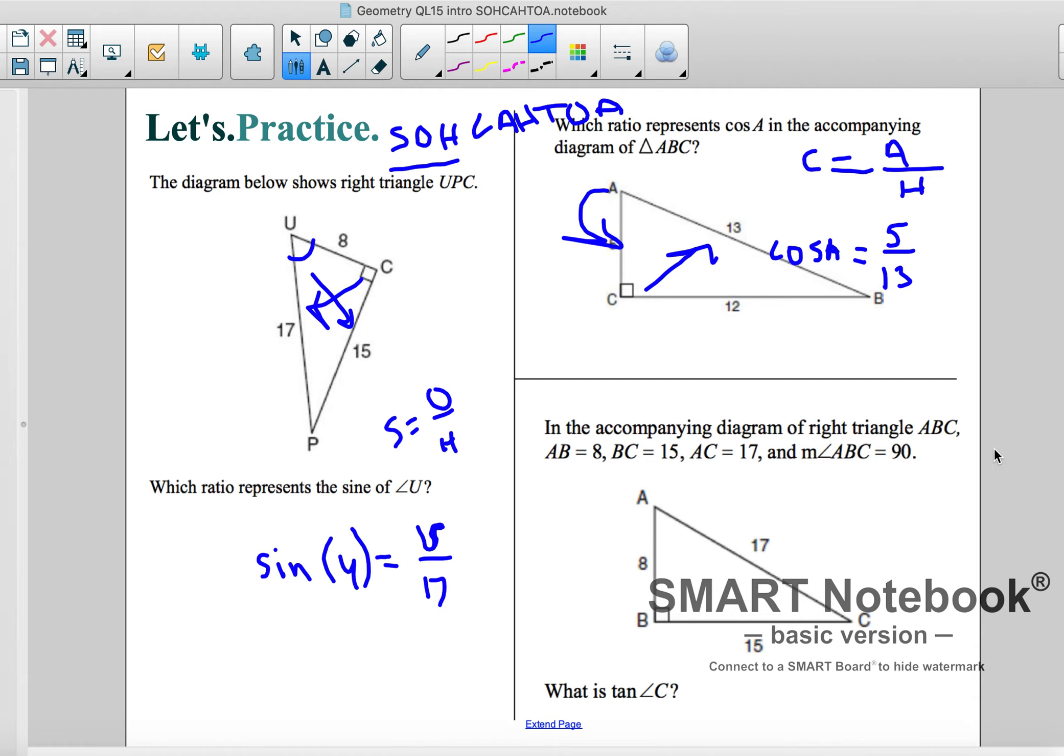And the accompanying diagram, same idea here. And we want tangent of C. Tangent we know is opposite over adjacent. And we can do our opposite. Well, we're looking at C. That's going to be 8. And our adjacent is 17. I'm sorry, is 15.